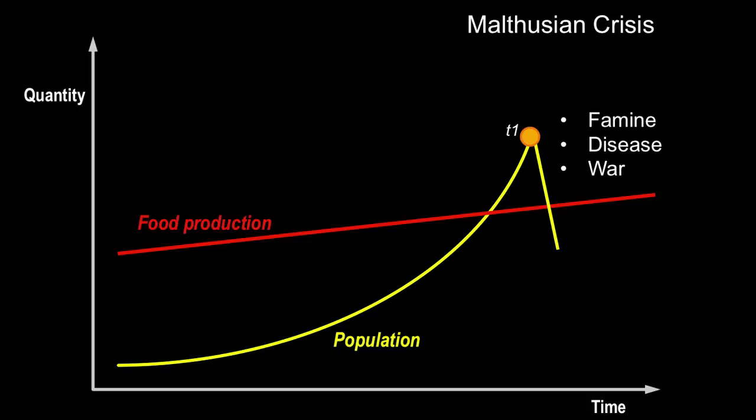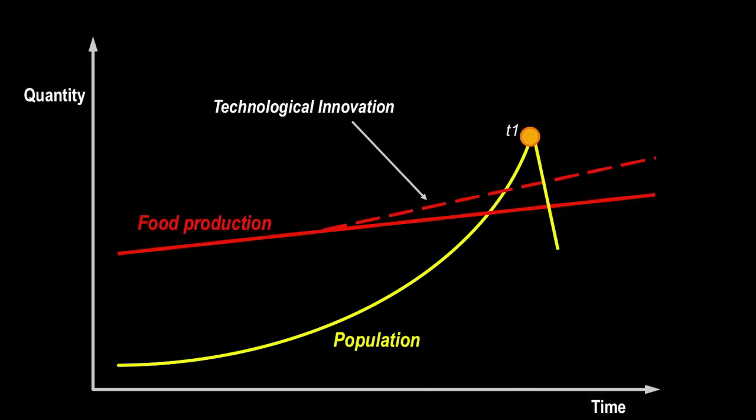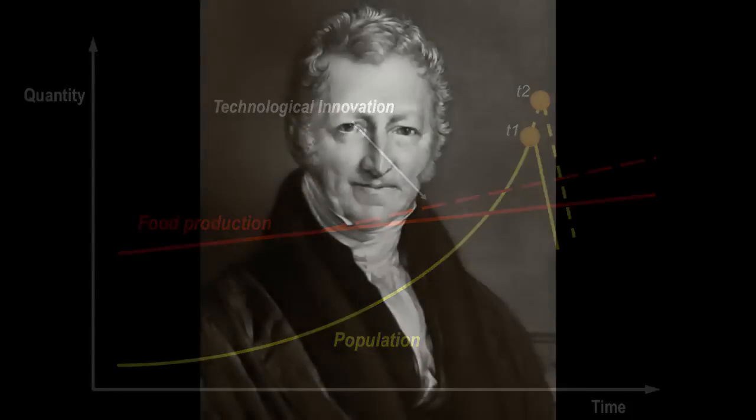However, Malthus recognized that technological development and better agricultural techniques could push up the ceiling of population and delay the point of crisis. But what goes up must come down, and inevitably population growth will outstrip technologically-driven food production and crash. Malthus's theory contradicted the optimistic belief prevailing in the early 19th century that a society's fertility would lead to economic progress.